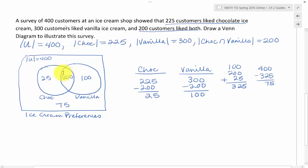I started off by putting the 200 in the intersection piece of my chocolate and vanilla sets. Then for chocolate, I took the total cardinal number of 225, subtracted off that 200 that also liked vanilla, and found 25 who only liked chocolate.